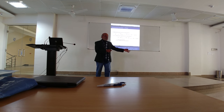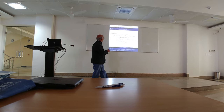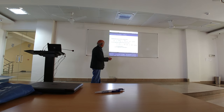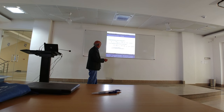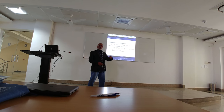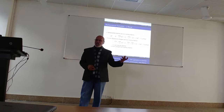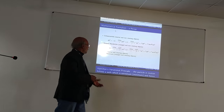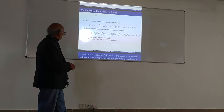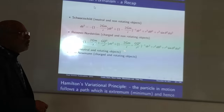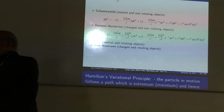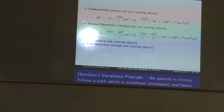Just one year after the Einstein equation was written, Schwarzschild solved this problem. If you have the additional term, you can describe charged black holes. Similarly, there are other possibilities to describe rotating neutral and rotating charged objects.